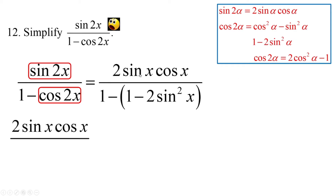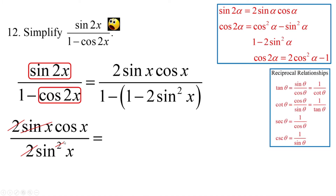Now we have 2 sine x cosine x over (1 minus (1 minus 2sin²x)). The 1 minus 1 cancels, and distributing the negative gives positive 2sin²x in the denominator. The 2s cancel, and one factor of sine cancels, leaving cosine x over sine x. Using reciprocal identities, cosine over sine is cotangent, so the answer is cotangent of x.